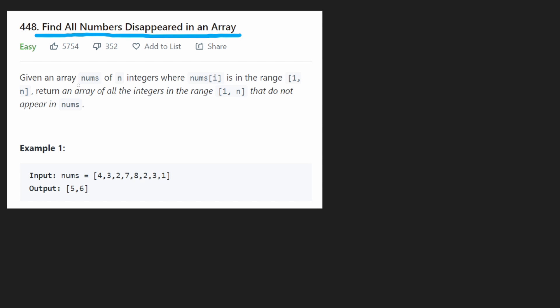We're given an array of nums and the length of that array is going to be n. And we know for sure that every single number in this array is going to be in the range between one and n. And we want to return an array of all the integers in this range that do not appear in nums.